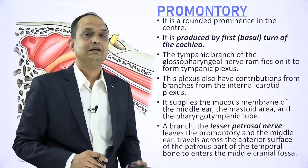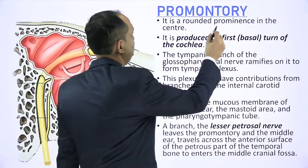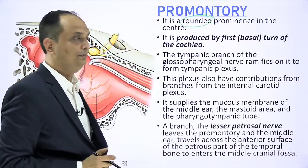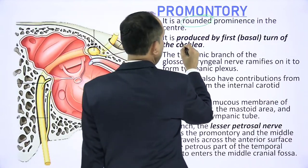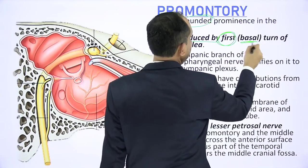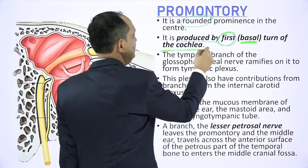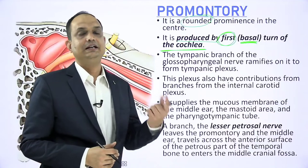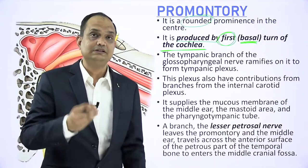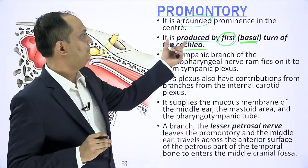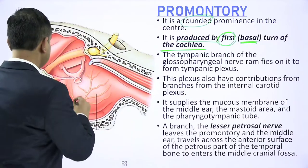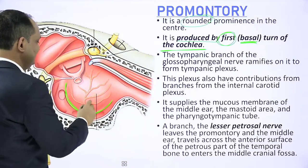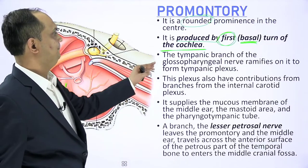The promontory is a round prominence in the center of the medial wall of the middle ear and is produced mainly by the first turn or basal turn of the cochlea, which is the underlying structure of the inner ear. It is a very commonly asked fill-in-the-blank question. When you see the inner ear, the cochlea produces a bulging called the promontory — produced because of the underlying cochlear bone.